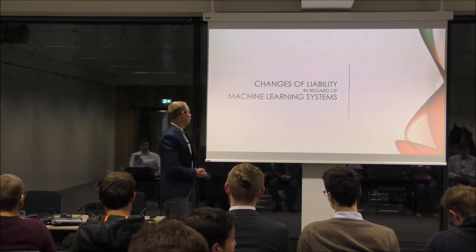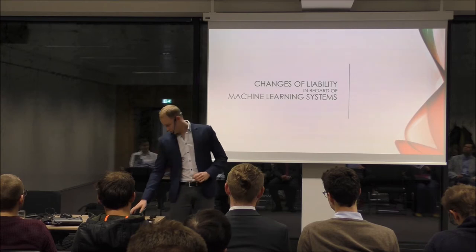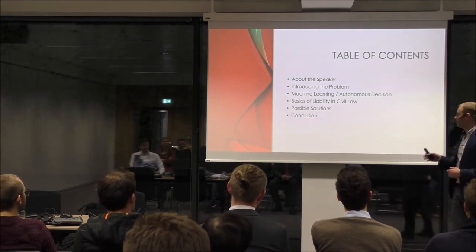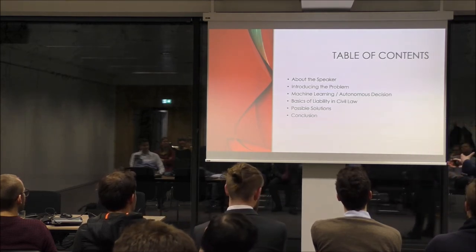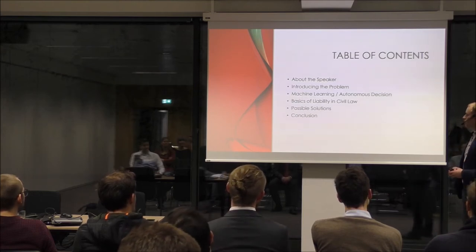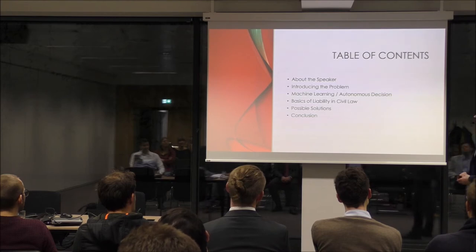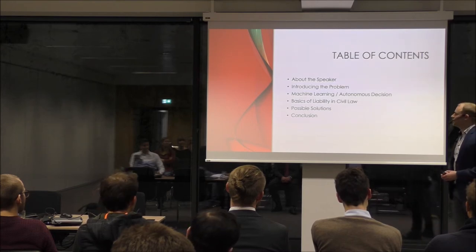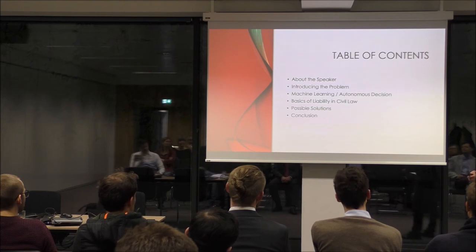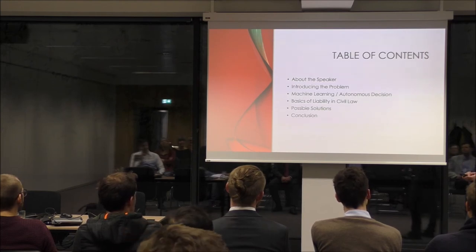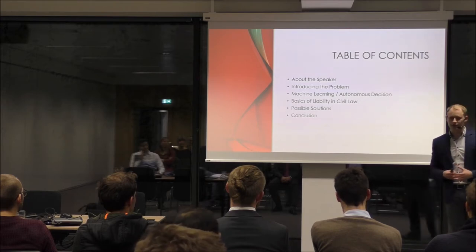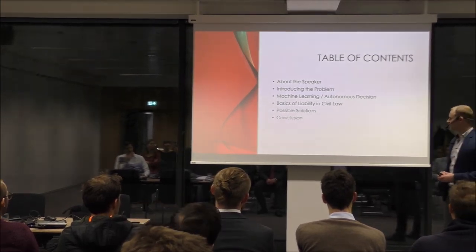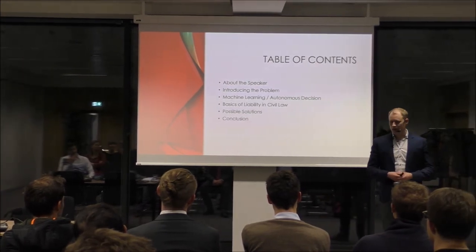I'm going to talk about changes of liability in regards to machine learning systems. I want to start with the outline. First, I'll talk about myself and what qualifies me to speak on this topic. Second, I'll introduce the problem. Third, machine learning and the key component of autonomous decision. Fourth, basics of liability in civil law, since not all of you have studied law. And finally, possible solutions and a conclusion.